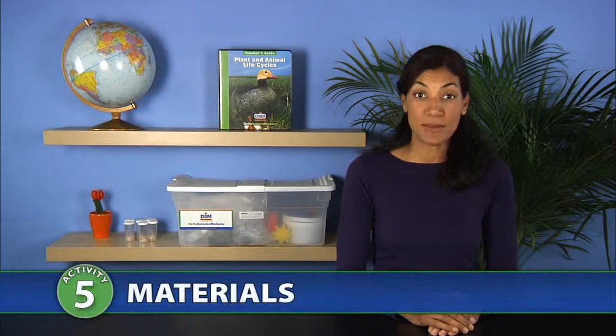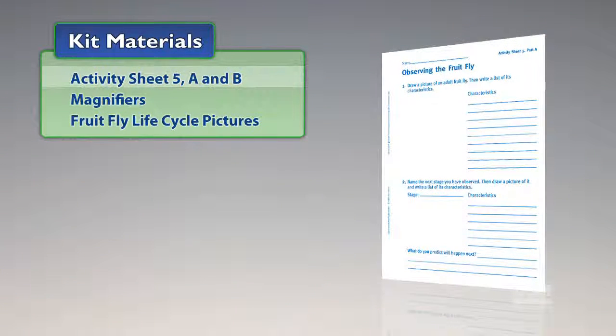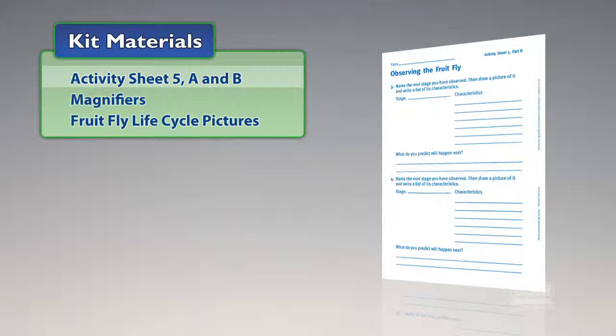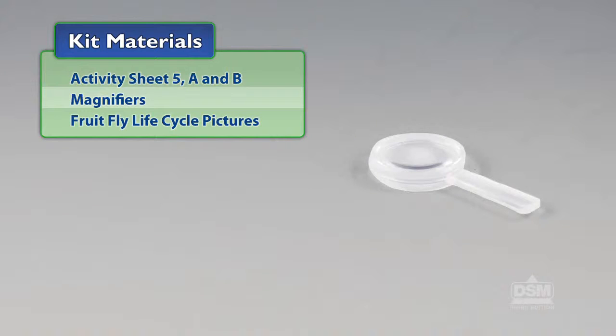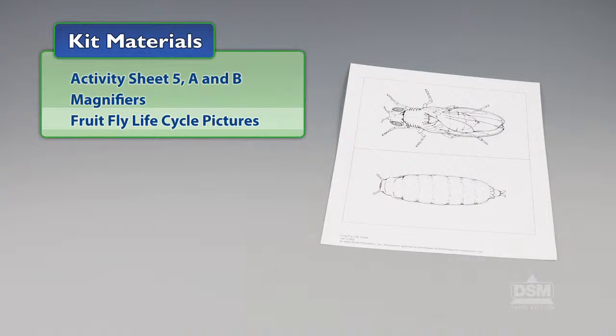You will need the following materials from the kit: Activity Sheet 5 Parts A and B, a magnifier, and fruit fly life cycle pictures.